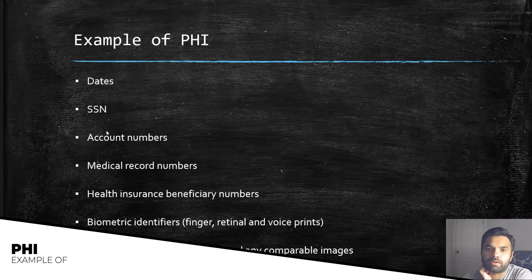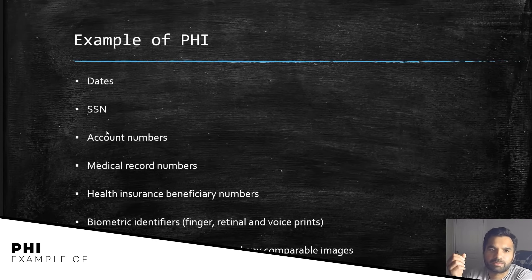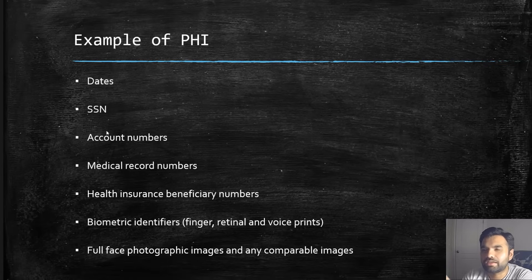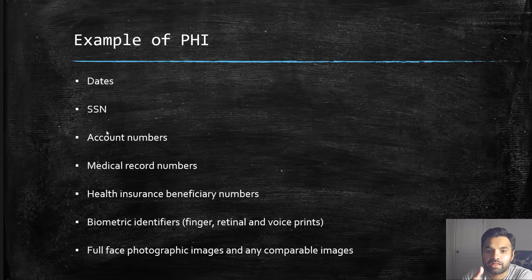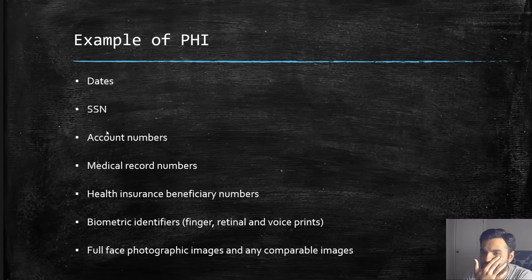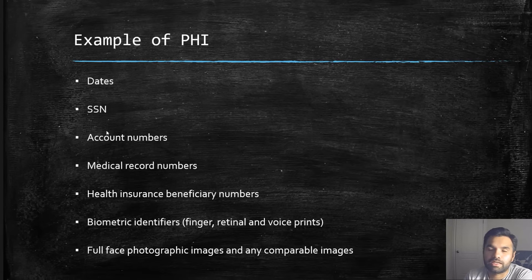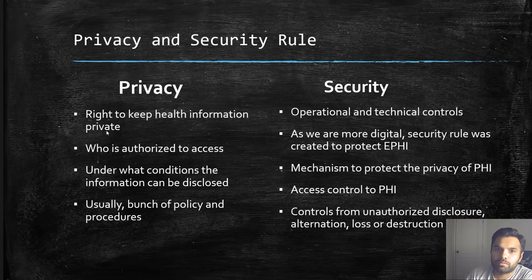Examples of PHI include dates — a full date of birth counts as PHI, but a year alone generally does not. Other examples are Social Security numbers, account numbers, medical record numbers, health insurance beneficiary numbers, biometric identifiers such as fingerprints, retinal scans, and voice prints, and full-face photographic images. Any of this information could be used to identify an individual.